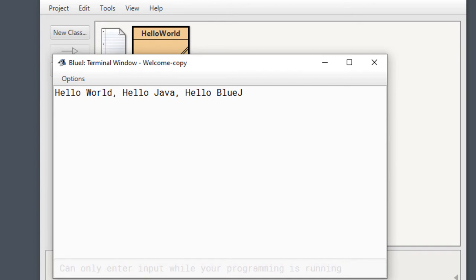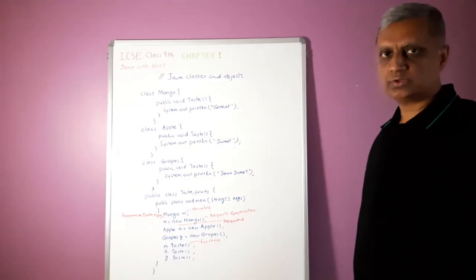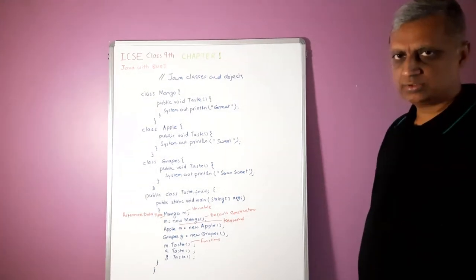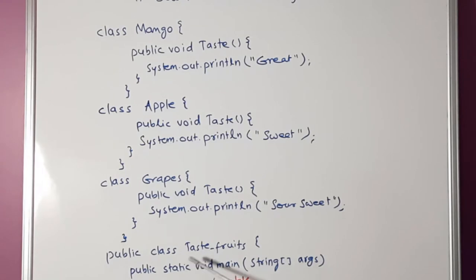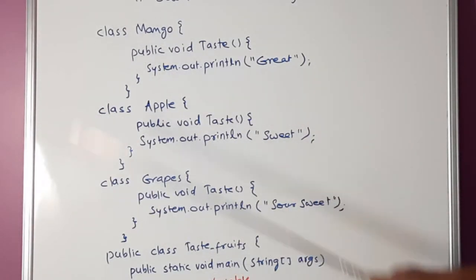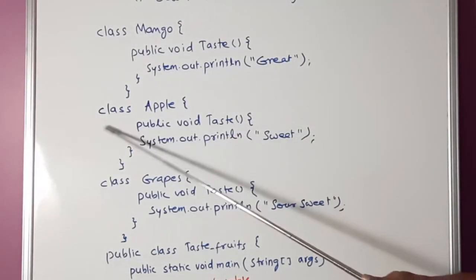Now let us look at a slightly longer Java program involving OOP concepts. To run this program, create a new project inside BlueJ's integrated development environment. After creating the project, create a new class in the project window — we will give it a name called Taste_Fruits, with T capital. That is the name of our class where the main function is located. We have also created three additional classes: class Mango, class Apple, and class Grapes. Java is an object-oriented programming language, and we will see a little bit of OOP in action here.